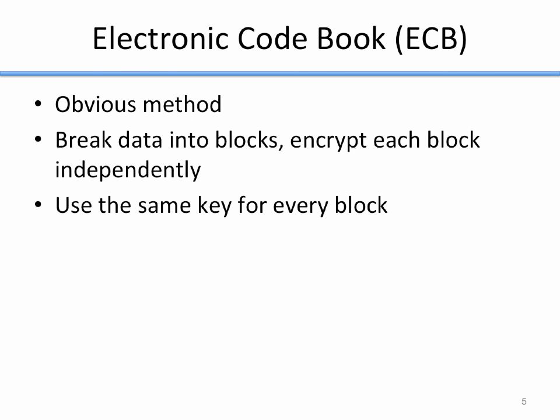The first operating mode is called Electronic Codebook, or ECB. This is the obvious method — the one everybody comes up with on their first try. You break data into blocks and then you just encrypt each block independently using the key.